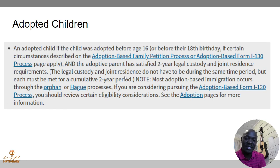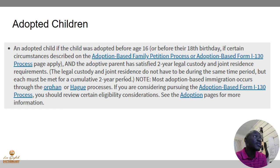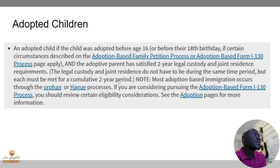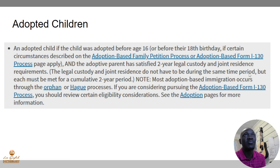Additionally, the adoptive parent must have satisfied a two-year legal custody and joint residence requirement — meaning you must have stayed with that child for two years. The legal custody and joint residence do not have to be during the same period, but each must be met for a cumulative two-year period.